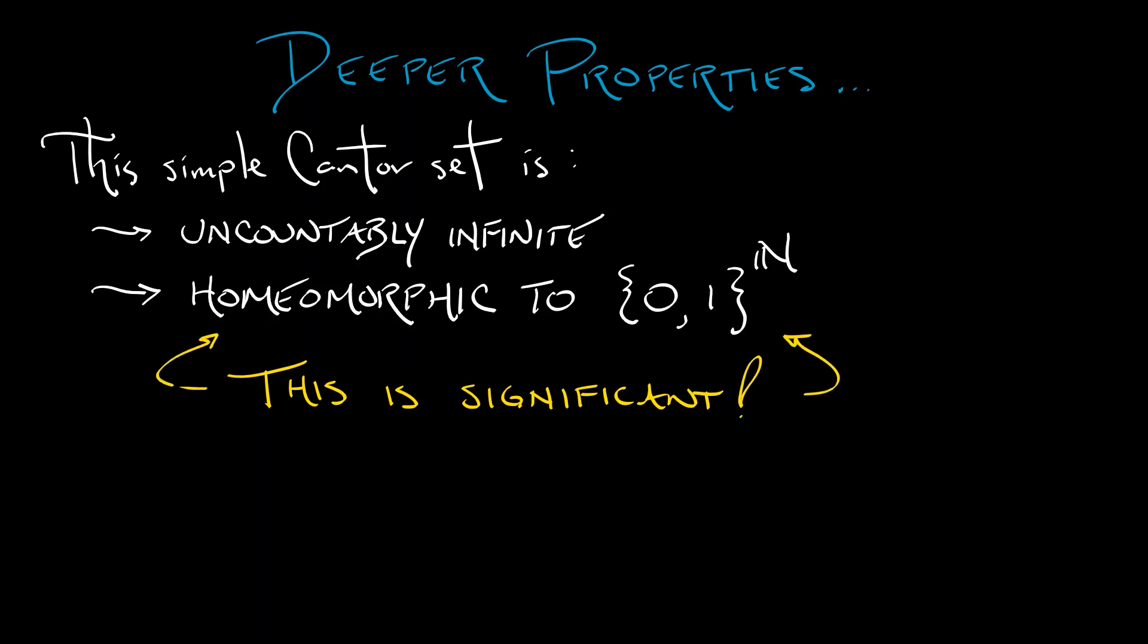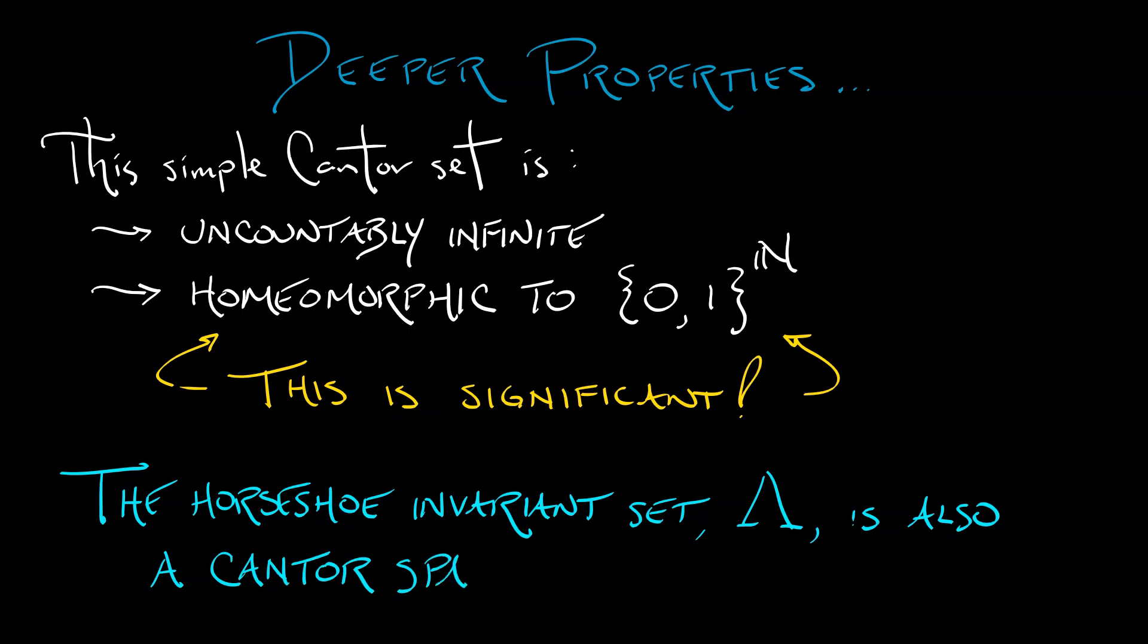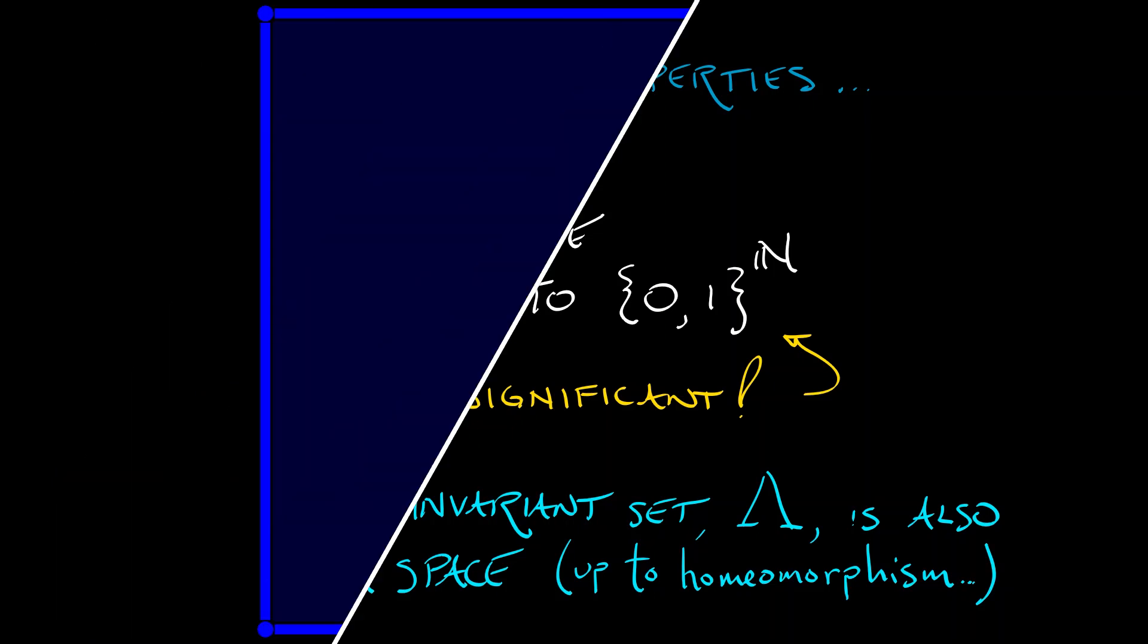What we are going to see, what we're going to take advantage of later on in the next chapter, is that the horseshoe invariant set Lambda is, just like this middle third's Cantor set, a Cantor space. It is really the same space up to homeomorphism.